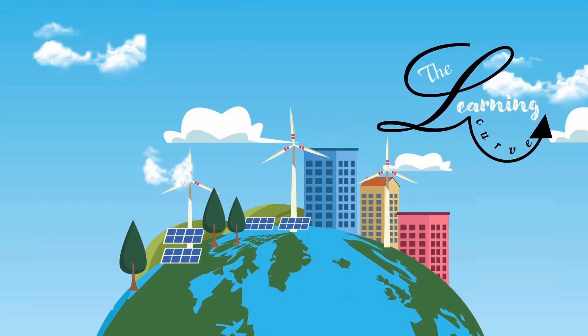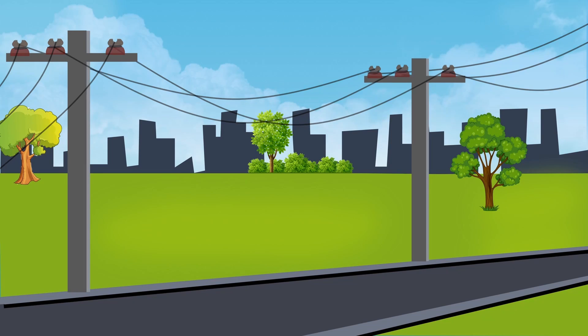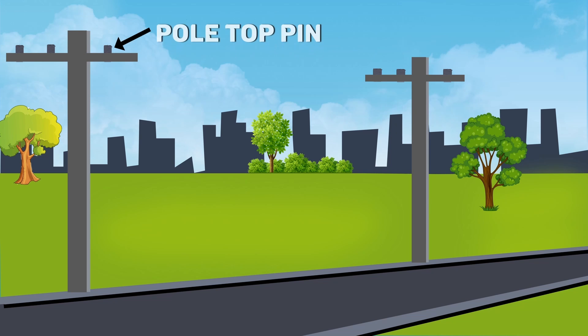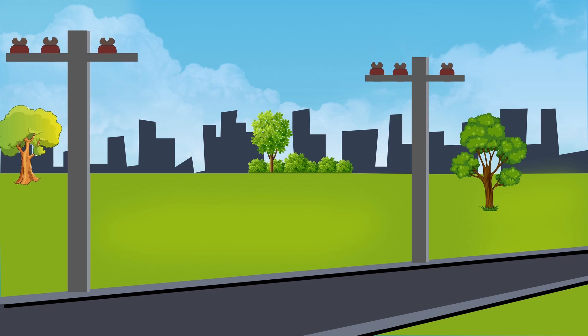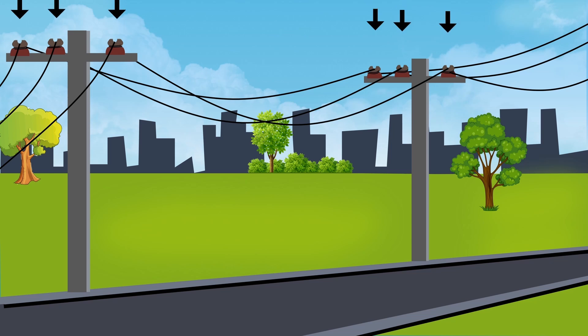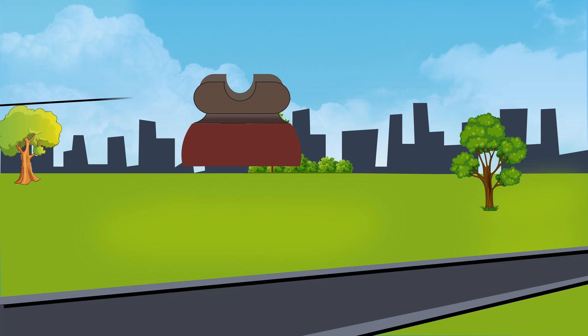Hi, I am Benila and you are watching The Learning Curve. Let's start with the pin type insulators. Pin type insulators are mounted on the cross arms of the poles with the support of pole top pins. A lead thimble is cemented into the insulator body to receive the pin. If you look at the top of the pin insulator, you will find a groove, or in other words, a narrow cut on it.